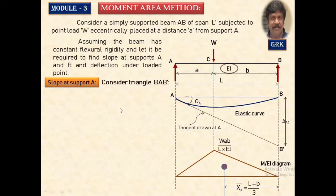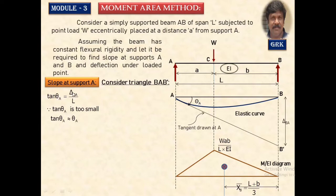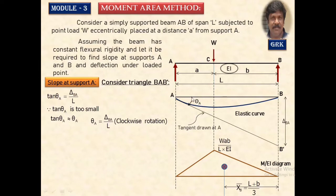To calculate the slope, consider triangle B, A, B-dash, where the angle at A equals theta_A. From trigonometry, tan(theta_A) equals the opposite side divided by the adjacent side L. Since the angle of deformation rotation is very small, we approximate tan(theta_A) equal to theta_A. Therefore, theta_A equals delta_BA divided by L.